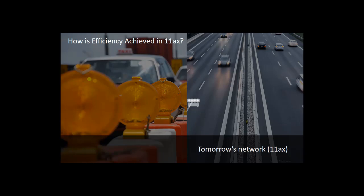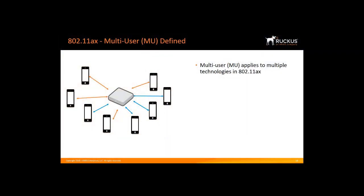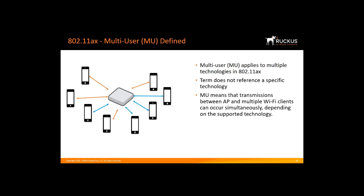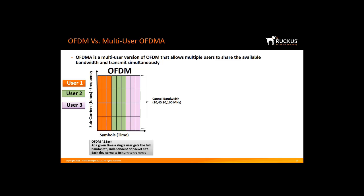Let's define some terms and concepts. Multi-user, or MU, applies to multiple technologies in 11ax, so it's important to understand that MU does not reference a specific technology such as MU-MIMO. It means transmissions between an AP and multiple Wi-Fi clients can occur simultaneously. 11ax defines the use of multi-user OFDMA, abbreviated MU-OFDMA, and multiple-input multiple-output MU-MIMO technologies. OFDMA is a multi-user version of OFDM in that it allows multiple users to share the available bandwidth and transmit simultaneously. A single user gets the entire bandwidth at any given time regardless of packet size.